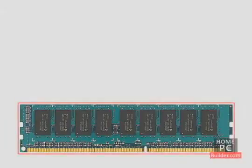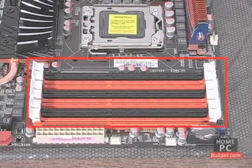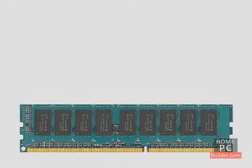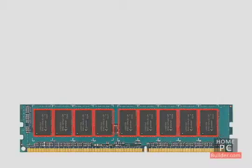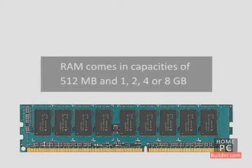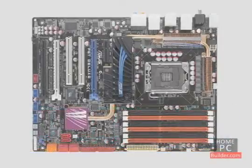Memory comes in the form of a stick that attaches to the computer's motherboard through a memory slot. The memory stick is actually made up of several individual memory chips that, when added up, combine to create the storage capacity of the memory stick. Memory sticks come in capacities of 512 MB and 1, 2, 4, or 8 GB. For more on motherboards, see the motherboard component lesson or the installation lessons.